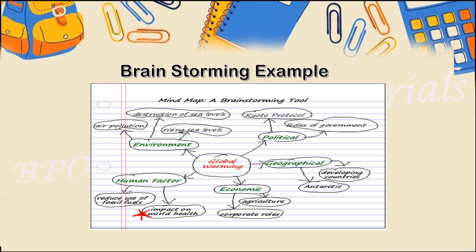Here is a general example. Suppose you are sitting in a classroom and asked to do brainstorming on global warming. We divide the global warming topic into five sub-topics: environment, political, geographical, economic, and human factors. Each team now gives their inputs on their respective topic, as you can see in the diagram. That particular activity is known as brainstorming — we are just gathering ideas here, not deciding the solution.